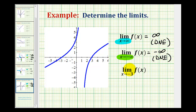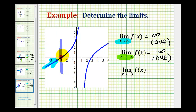For this last one, we have the limit as x approaches negative three of f of x. We'll be approaching negative three from the left and the right to see if we're approaching the same function value. As we approach from the left, notice how we're approaching this point here, so we're approaching the function value of zero. The same is true when we approach negative three from the right — we're approaching a function value of zero. Therefore the limit as x approaches negative three of f of x is equal to zero.